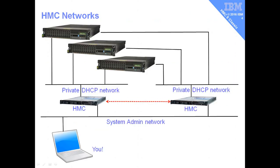These Ethernet ports aren't for regular communication from applications and operating systems in your virtual machines. So how do we network this all together? You're connected to a system admin network, typically in a larger computer room. The HMCs sit on that network, giving you access to the command line and graphical user interface. At the back of the HMC, it's running another network using DHCP - those are connected to the service processor. There are two service processor Ethernet connections; the other goes to a network run by another HMC. These HMCs communicate with each other - if you create a virtual machine on one, within a couple of seconds the other HMC will know all about it, giving you lots of redundancy.